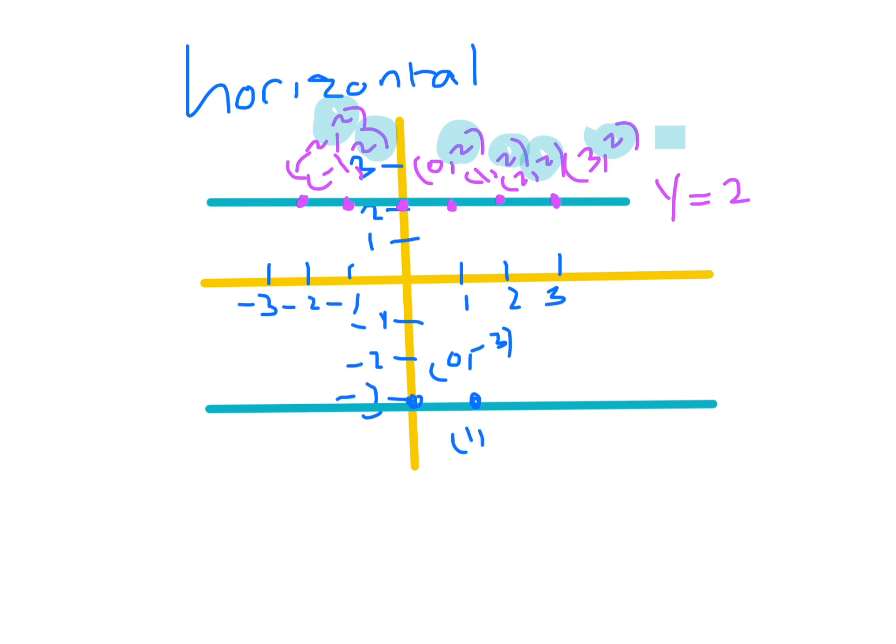This point here is one minus three. Two minus three. Three minus three. So what's happening here? Minus one minus three. So if you look at those, what's actually happening,